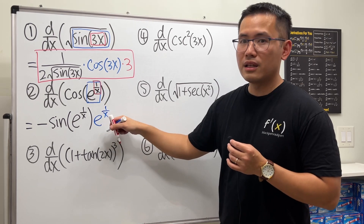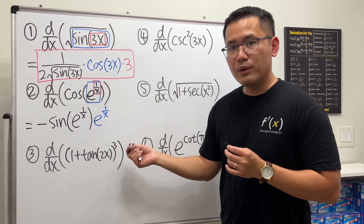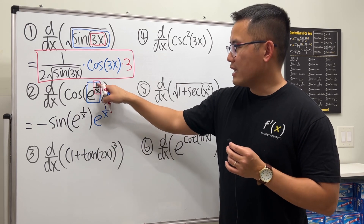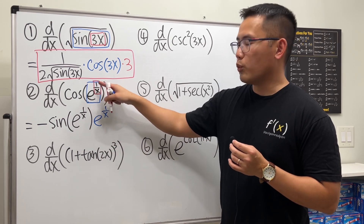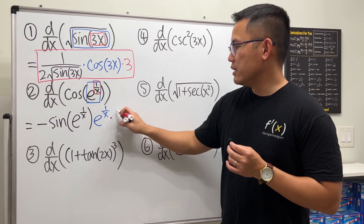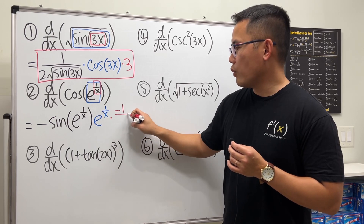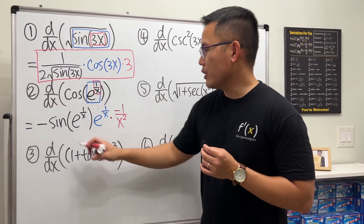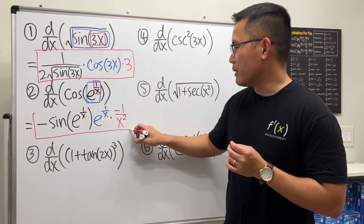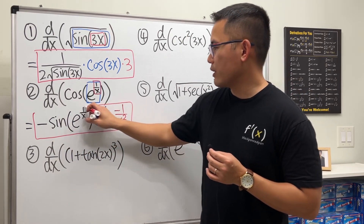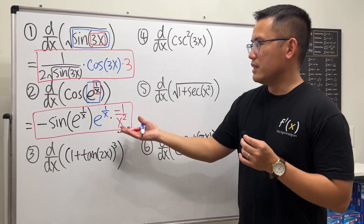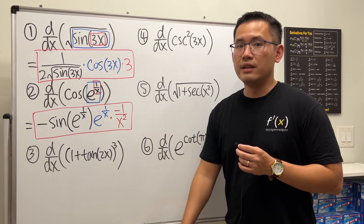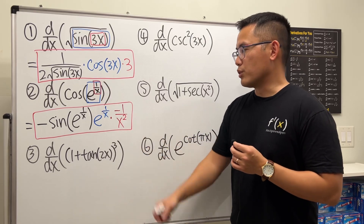Finally, we differentiate the very inside: the derivative of 1 over x, which is negative 1 over x squared. Negative times negative is positive, but I'll leave that to you. I think this is clearer on what exactly to do to get the derivative.